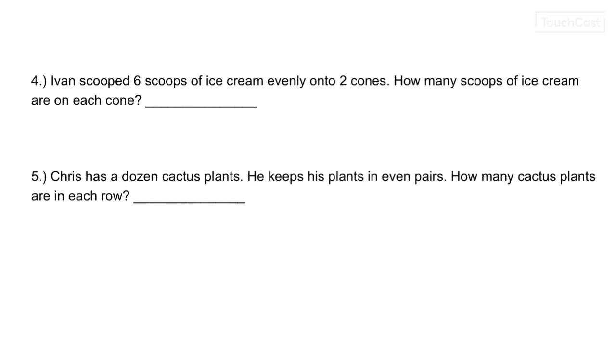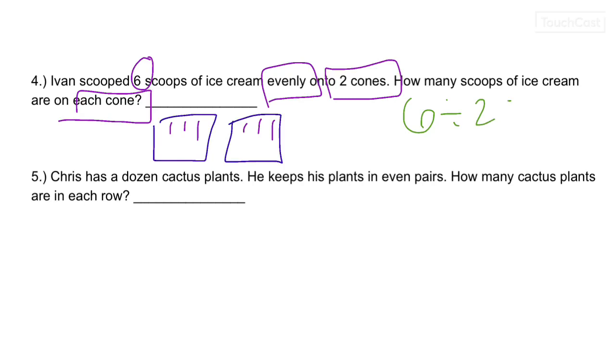Number 4. Ivan scooped 6 scoops of ice cream evenly onto 2 cones. How many scoops of ice cream are on each cone? So, here are my 2 cones. You notice I just draw boxes. And the total is 6. [Counting 1 through 6]. 6 divided by 2 equals blank. Or 2 times blank equals 6. What's my answer? 3.